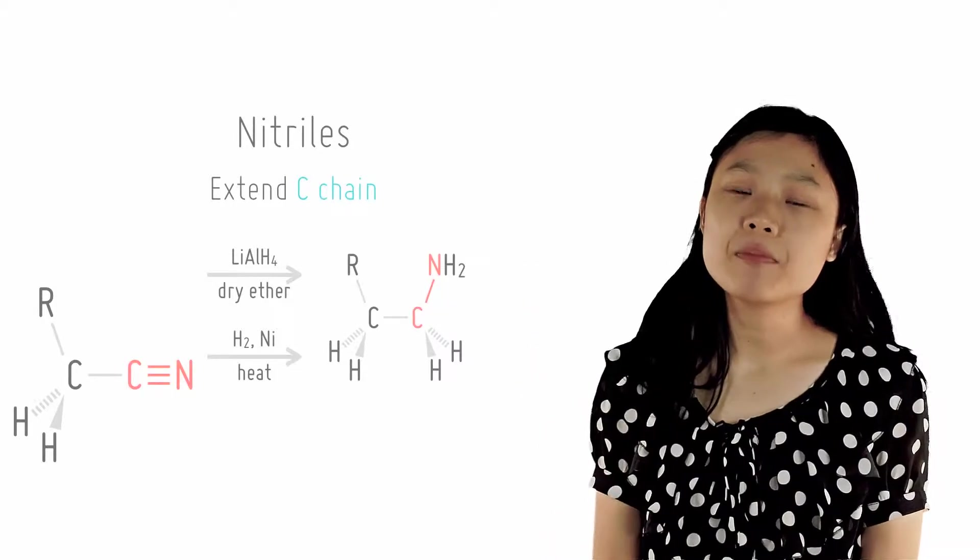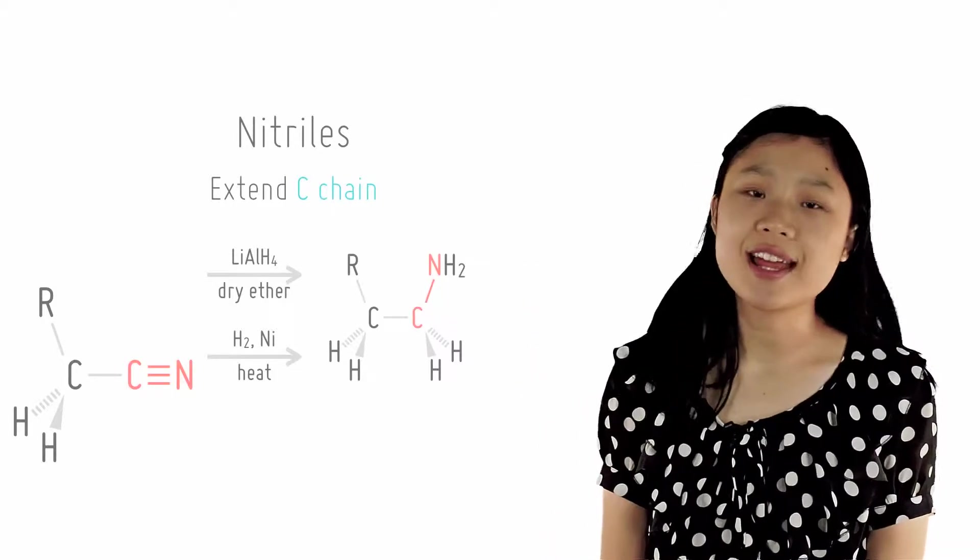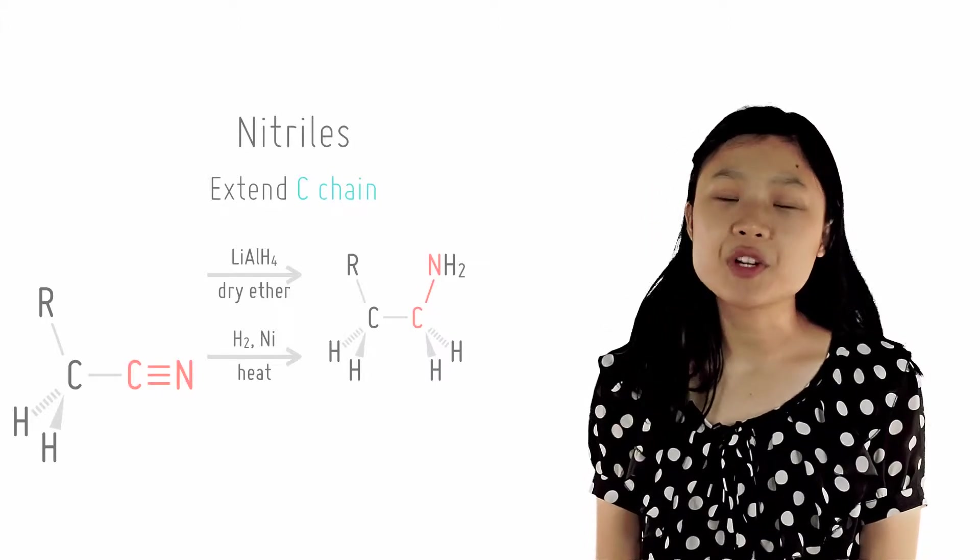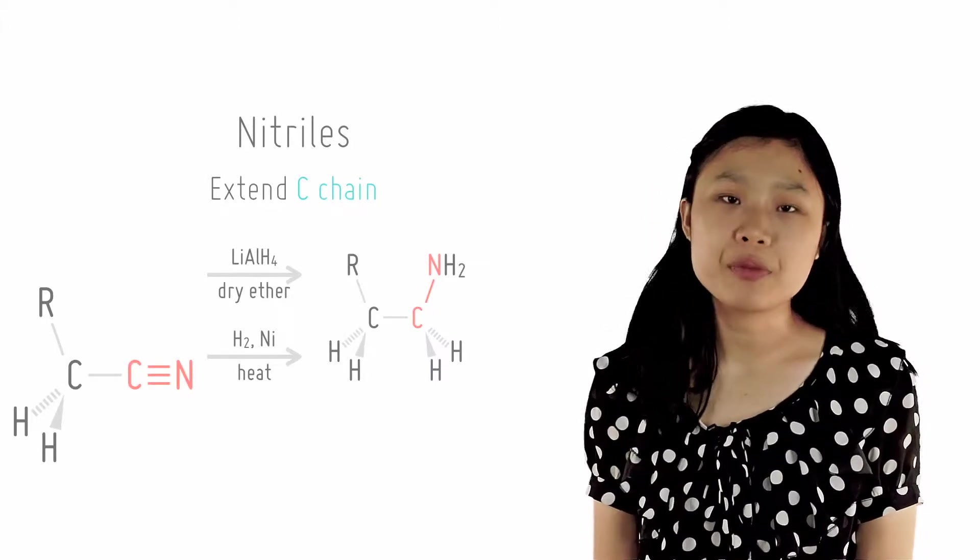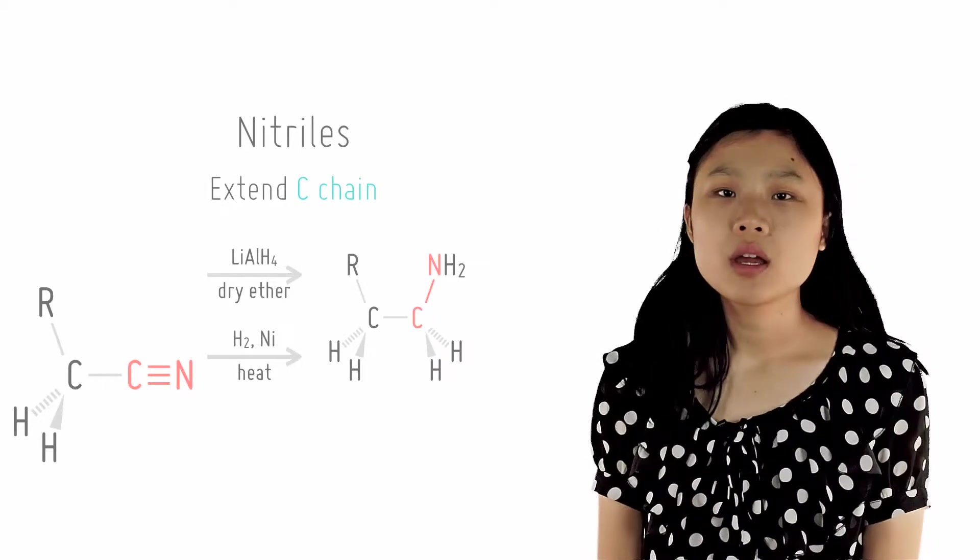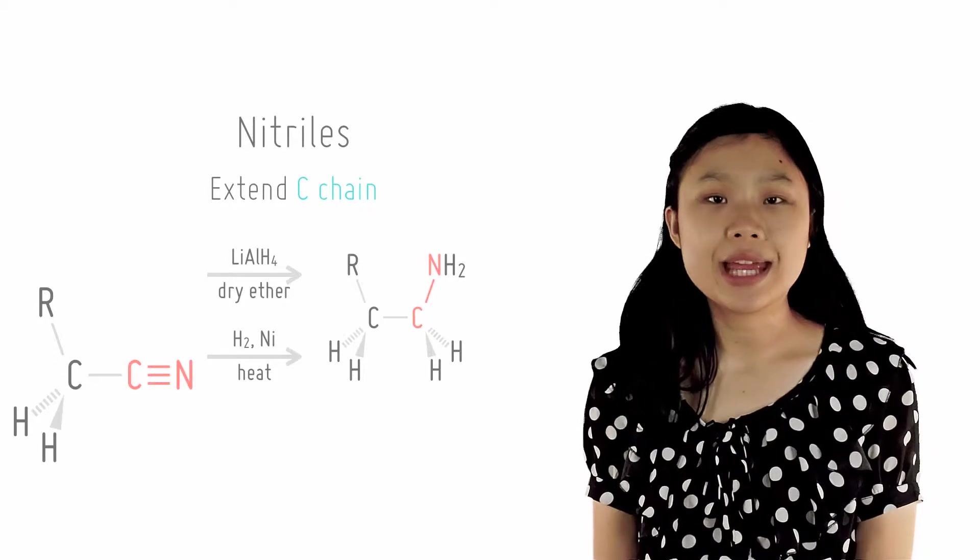The nitrile can then be converted to amines or carboxylic acids. To convert the nitrile into an amine, we can reduce it in lithium aluminium hydride in dry ether at room temperature, or by heating it with H2 and a nickel catalyst. We will be covering this again when we talk about amines.